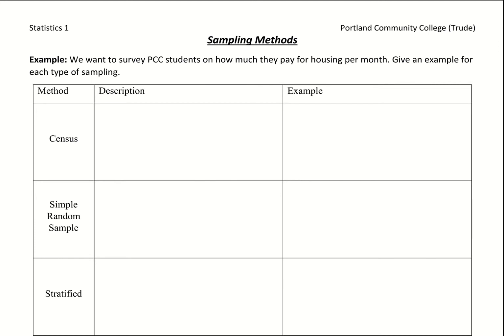There are many different ways to collect data, and we're going to talk through the different sampling methods that can be used. When we're told how data was collected, it's important to note which sampling method was used, because with each one there are benefits and downfalls. We want to be careful of those possible downfalls, which could make us not trust the data. We'll describe each method and apply an example: if we wanted to survey PCC students on how much they pay for housing per month, how would we collect that data?